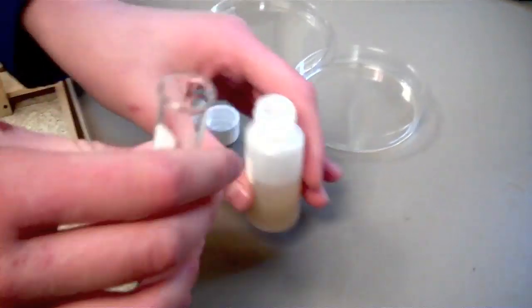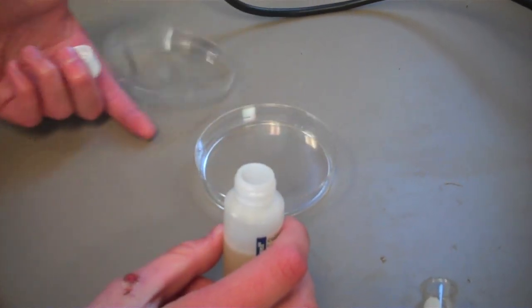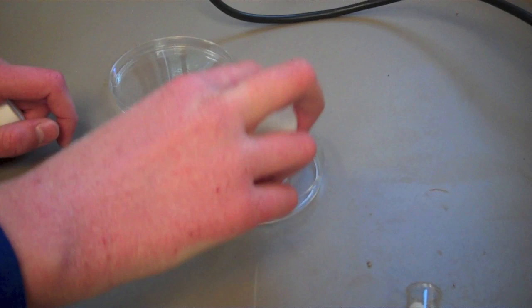Then mix the water with the Easy Gel. Shake the bottle for 30 seconds. After shaking, pour the contents of the bottle into a petri dish.